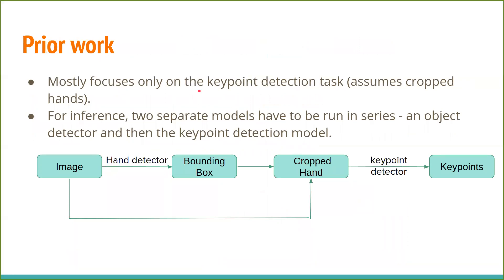Prior work has mostly focused only on the key point detection task — that is, it assumes cropped images during training. This means that for inference, two separate models have to be run in series: first, an object detector upon the image, and then a key point detector upon the cropped hand.